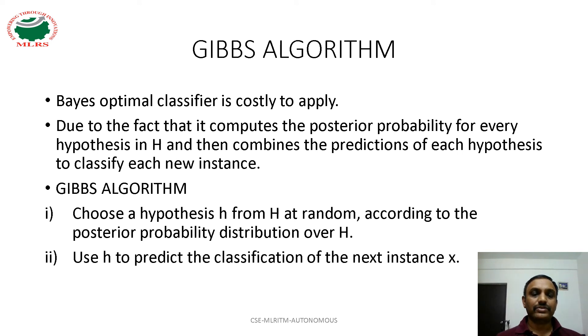To overcome this drawback, we can use Gibbs algorithm. In this algorithm, instead of considering all the hypotheses, we are choosing one hypothesis H from the set of all hypotheses at random, according to posterior probability distribution over H.